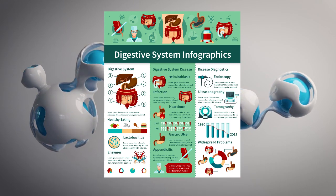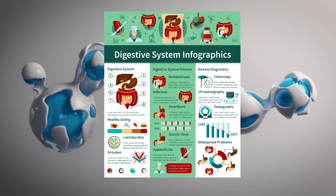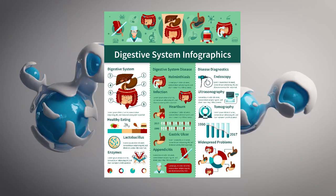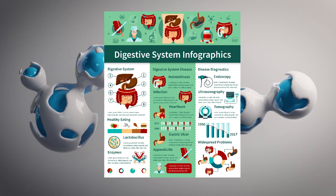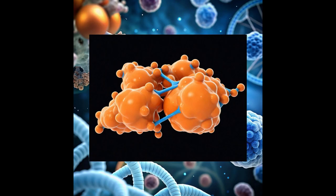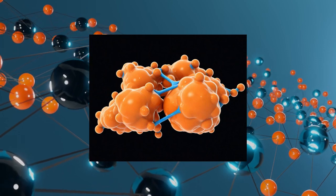The lock and key theory is a widely accepted model explaining how enzymes function. According to this theory, enzymes have a specific shape that allows them to bind to a particular substrate, the molecule the enzyme acts upon, forming an enzyme-substrate complex.